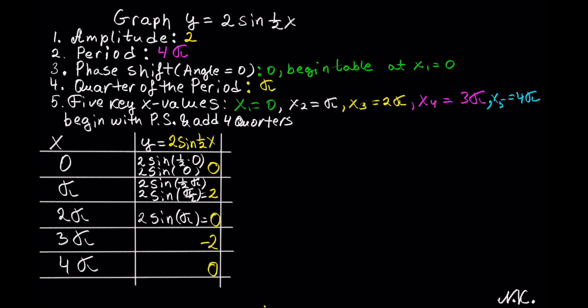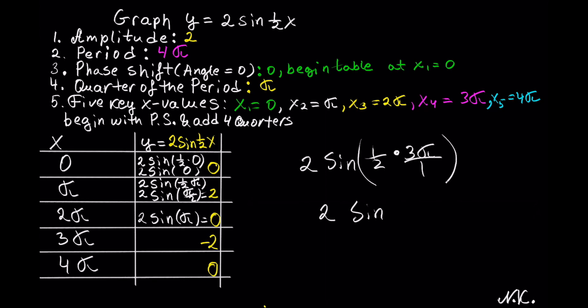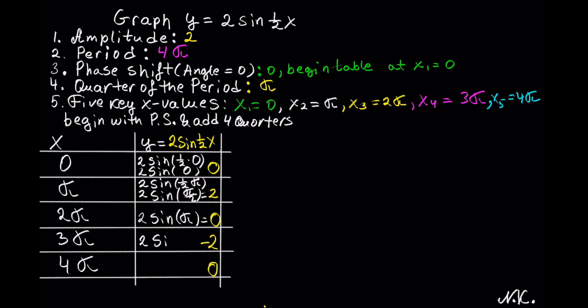The next x value is 3 pi, so we substitute into 2 sin of 1 half of x. The angle becomes 1 half times 3 pi, which gives 3 pi over 2. If you have calculated the phase shift, period, and quarter of the period correctly, the angle inside the sine should always simplify into the quadrantal angles. This is 3 pi over 2, which is on the negative y-axis, equal to 270 degrees. So 2 sin of 3 pi over 2 should be equal to negative 2.